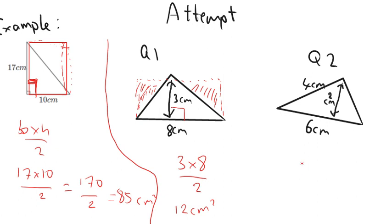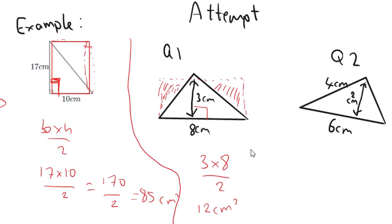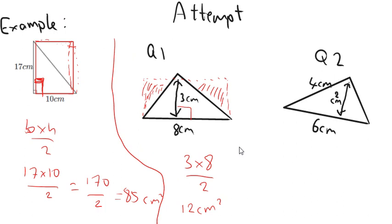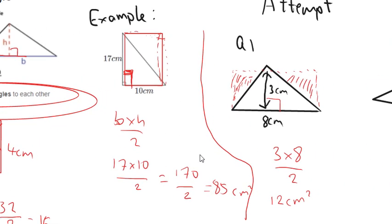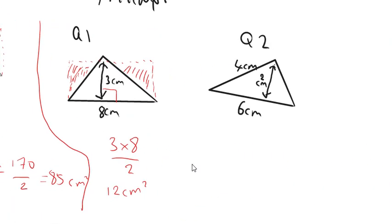Question two here actually gives you three dimensions. But remember what we said? There's actually one of them in here just that's there to confuse you. Remember what we said here? We said that the base and the height are at right angles to each other. So the base and the height here must be at right angles to each other.